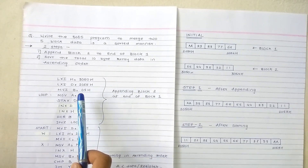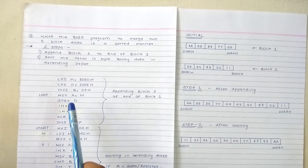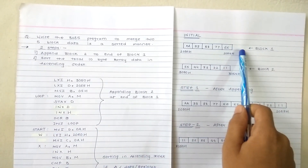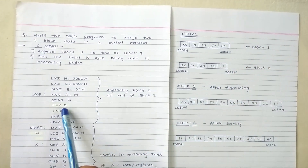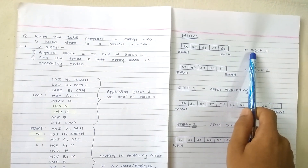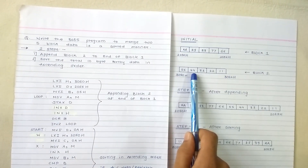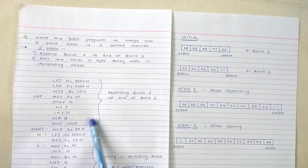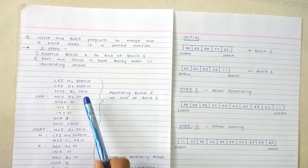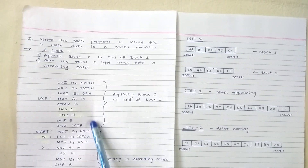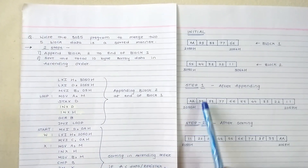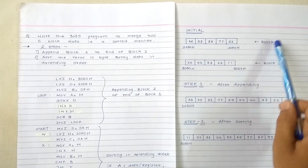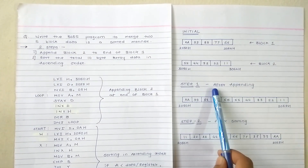We move the data present at the source into the accumulator, then store the accumulator data into the memory location next to block 1. We increment the destination register, increment the source register, and jump to the loop. This loop continues for 5 times until the count becomes 0, appending all block 2 data to the end of block 1.